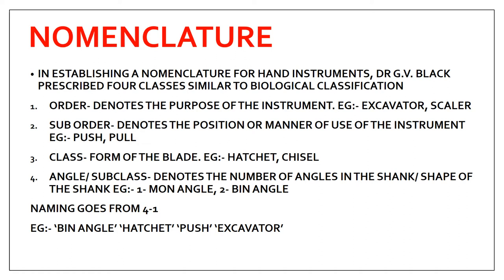The suborder denotes the position or manner of use of the instrument — how you are using it, whether in a pull or push motion. The third class is the form of the blade; for example, it can be a hatchet or a chisel. The fourth is the subclass, which denotes the number of angles — one angle or two angles.